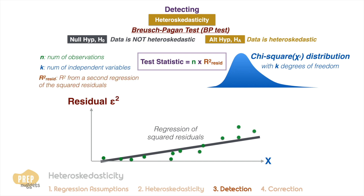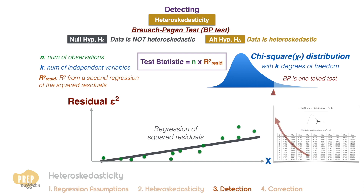You will not be asked to calculate this as it is a common output from statistical software. Also, remember that this is a one-tailed test, because heteroscedasticity is only a problem if the R-squared and the Breusch-Pagan test statistic are too large. We derive the critical value from the chi-square distribution table, and if the test statistic falls inside the rejection region, we reject the null hypothesis, meaning the data exhibits significant heteroscedasticity.